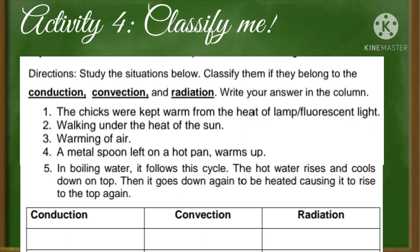For our last activity: Classify Me. Study the situations below and classify them as conduction, convection, or radiation. Write your answer in the column. 1. The cheeks were kept warm from the heat of a flame or fluorescent light. 2. Walking under the heat of the sun. 3. Warming of air. 4. A metal spoon left on a hot pan warms up. 5. In boiling water, it follows this cycle: the hot water rises, cools down on top, then goes down again to be heated, causing it to rise to the top again.